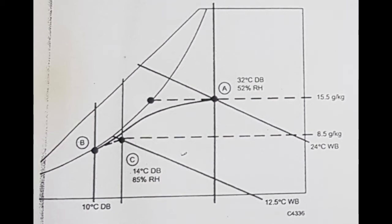Point number one: The entering condition of air is 32 degrees centigrade dry bulb and 52 percent RH, that is point A. The moisture content is 15.5 grams of moisture per kilogram of dry air, as you can see in the chart.